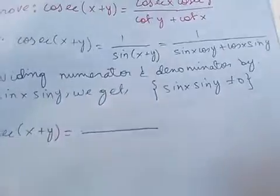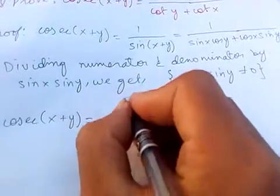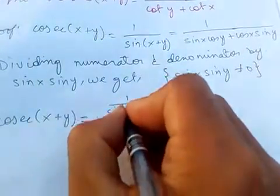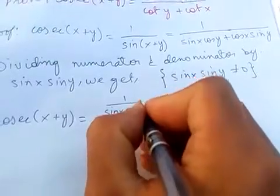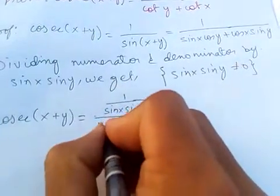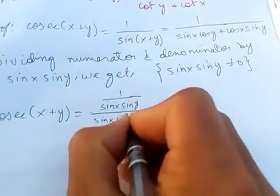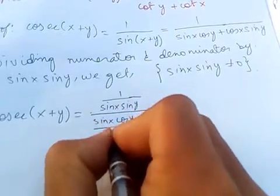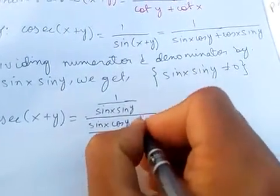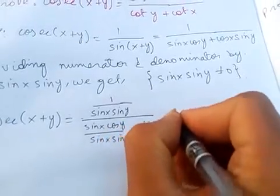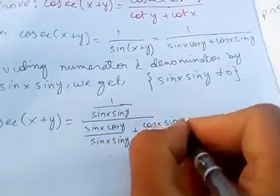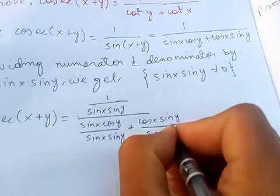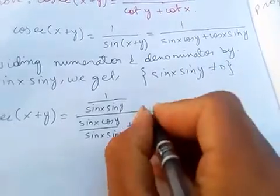Now let's divide this one by sine x sine y. So it will be one over sine x sine y, over sine x cos y over sine x sine y, plus cos x sine y over sine x sine y.